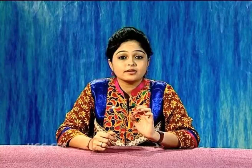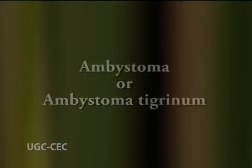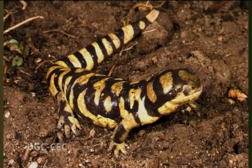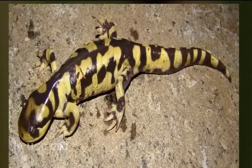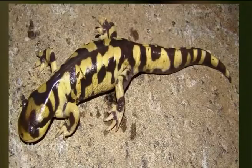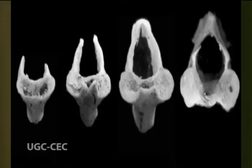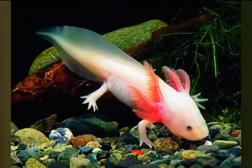Let us discuss some representative types of amphibians, broadly categorized into salamanders and newts, and frogs and toads. Ambystoma tigrinum is commonly known as tiger salamander. Body is elongated lizard-like, measuring about 12 cm in length. The color of the body is black with yellow patches. Skin is poisonous. Limbs are well developed. Four limbs bear four fingers and hind limbs have five toes. External gills are absent in the adult stage. Vertebrae are amphicoelous. Sexes are separate and fertilization is external. The larva is known as axolotl. Ambystoma is found in North America from southern Alaska to Mexico.